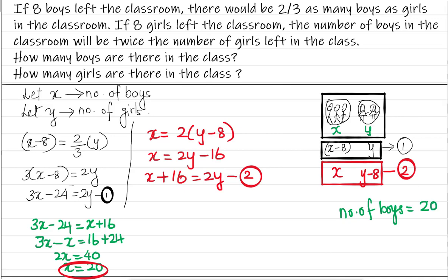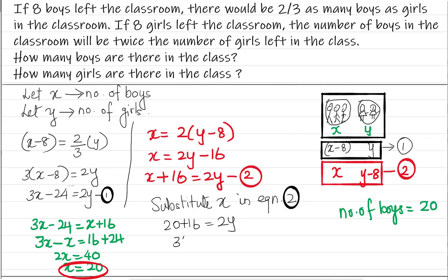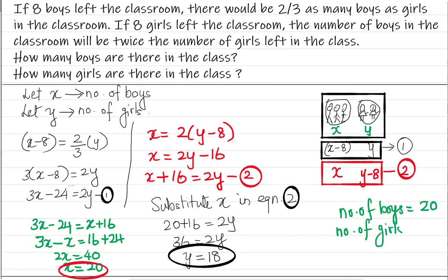Now we substitute this value of X into one of the equations. I'll choose equation 2: X plus 16 equals 2Y. We know X is 20, so 20 plus 16 equals 2Y, which gives us 36 equals 2Y, meaning Y equals 36 divided by 2, which is 18. So the number of girls in the class is 18.